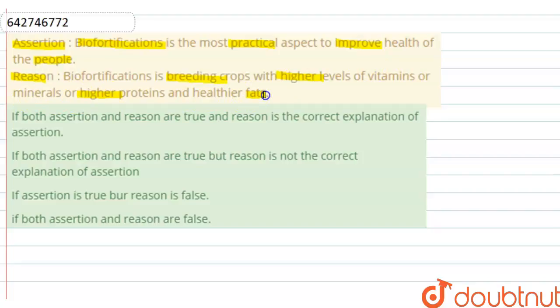Options are: If both assertion and reason are true and reason is the correct explanation of assertion. B: If both assertion and reason are true but reason is not the correct explanation of assertion. C: If assertion is true but reason is false. D: If both assertion and reason are false.